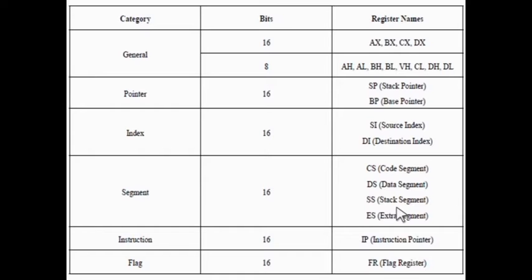The data segment register can be changed directly using LDS instructions. Stack segment register is a 16-bit register containing the address of a 64 KB segment with the program stack. By default, the processor assumes that all data referenced by the stack pointer and base pointer registers is located in the stack segment. The stack segment register can be changed directly using POP instructions.